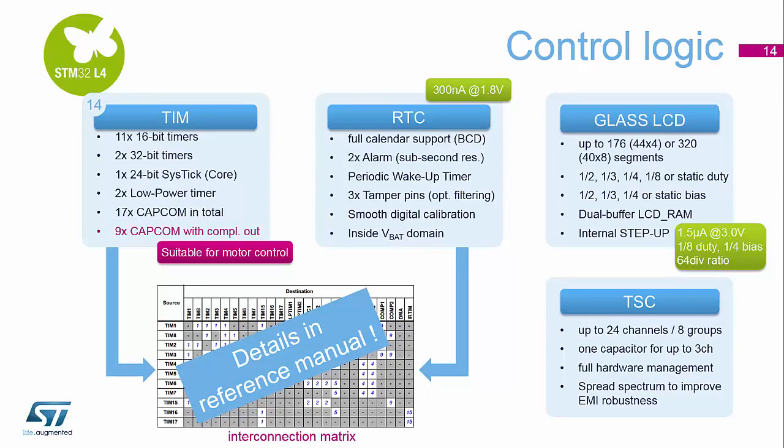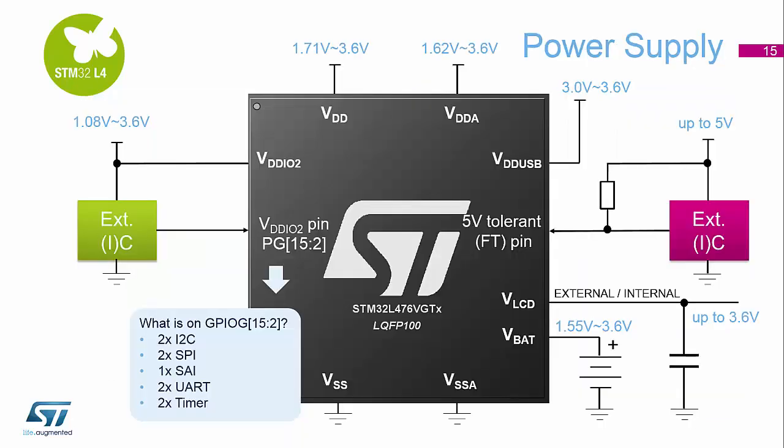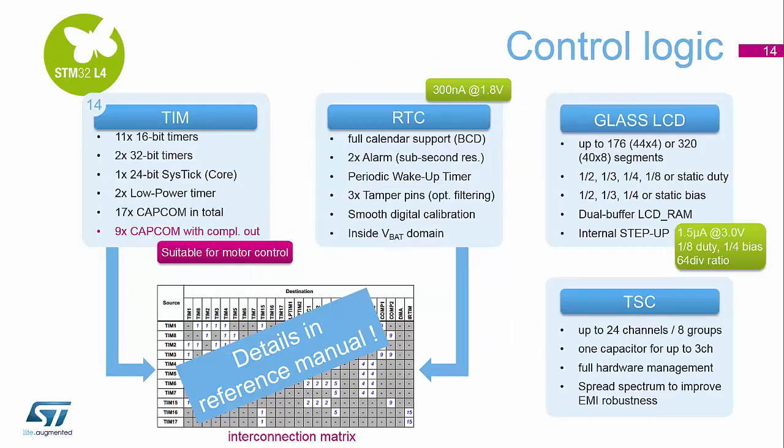The next section is control logic, covering all components needed for running the system. We have up to 14 timers inside the STM32 L4: eleven 16-bit, two 32-bit, and two low power timers dedicated to work in all low power modes. These low power timers can also be clocked from external sources — you can put the device into full stop mode with all clocks off while the timer still receives pulses from an encoder, for instance. We also have capture/compares with complementary outputs for motor driving, including a full motor control timer on board.